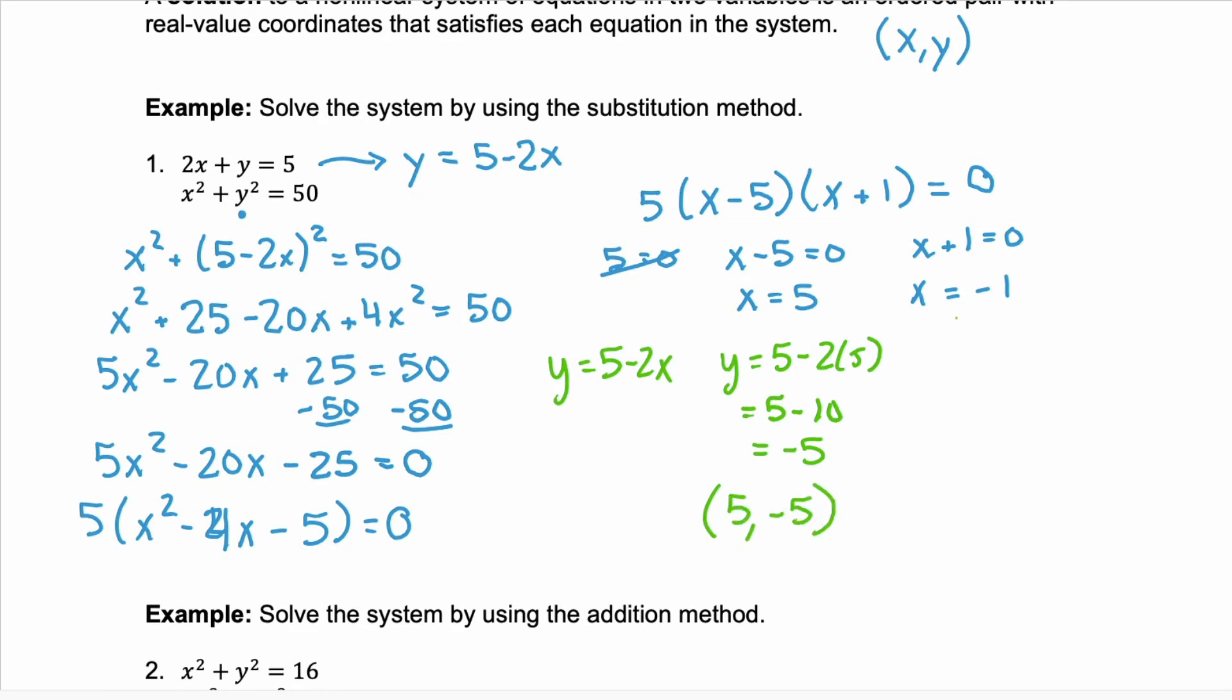Our second value of x equals negative 1 would have a y coordinate of y equals 5 minus 2 times negative 1, which is 5 plus 2 or 7. So this is the point negative 1, 7.